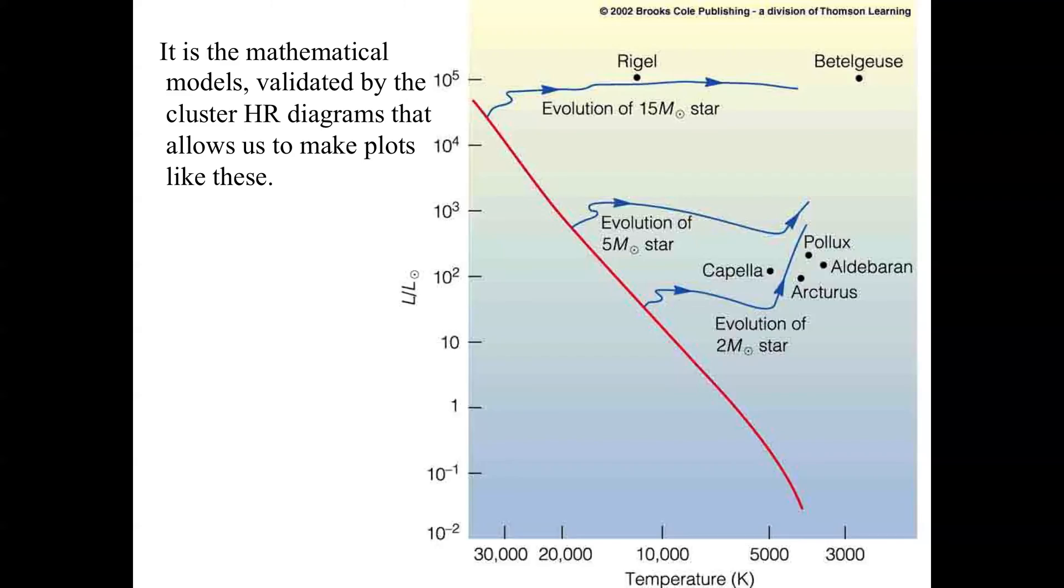Mathematical models of stellar interiors and the nuclear fusion that goes on in them produce these theoretical plots of how stars evolve once they leave the main sequence. This is validated by looking at cluster HR diagrams so that we can compare them to plots like this to see whether the stars in the cluster actually populate the space along these lines.